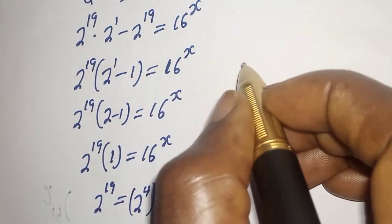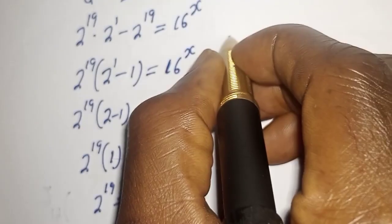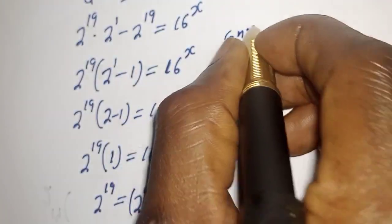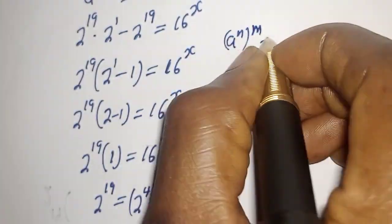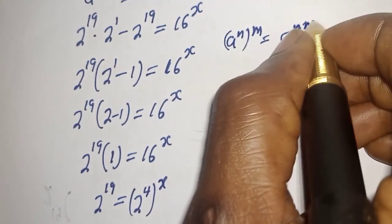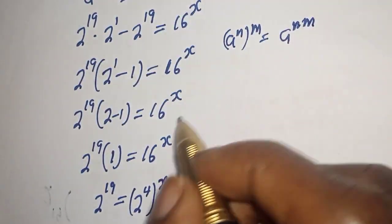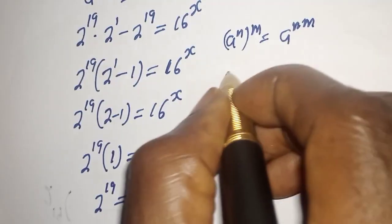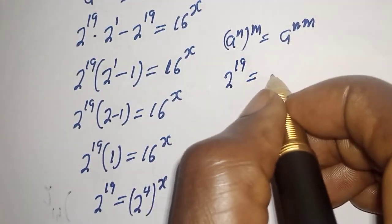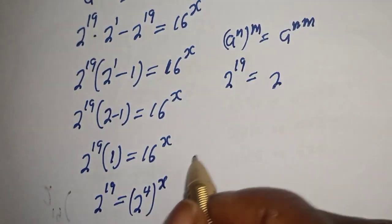Take note: if you have a raised to power n to the power of m, this is equal to a raised to power n times m. So this can be written as 2 raised to power 19 is equal to 2 raised to power 4 times x.